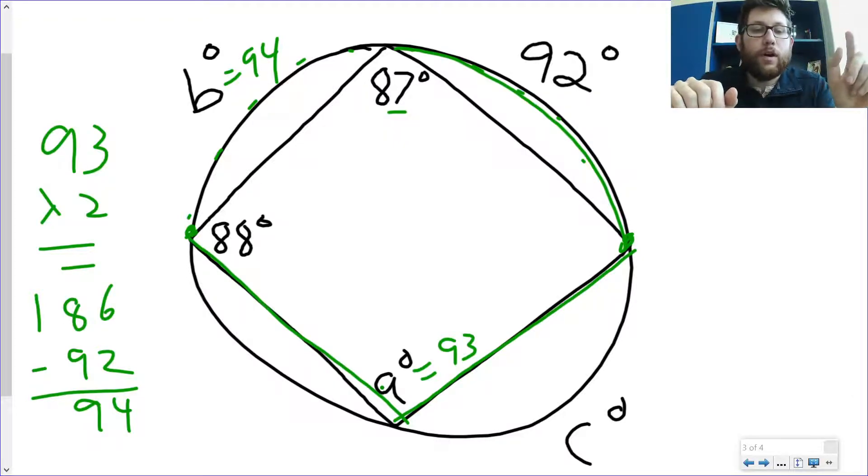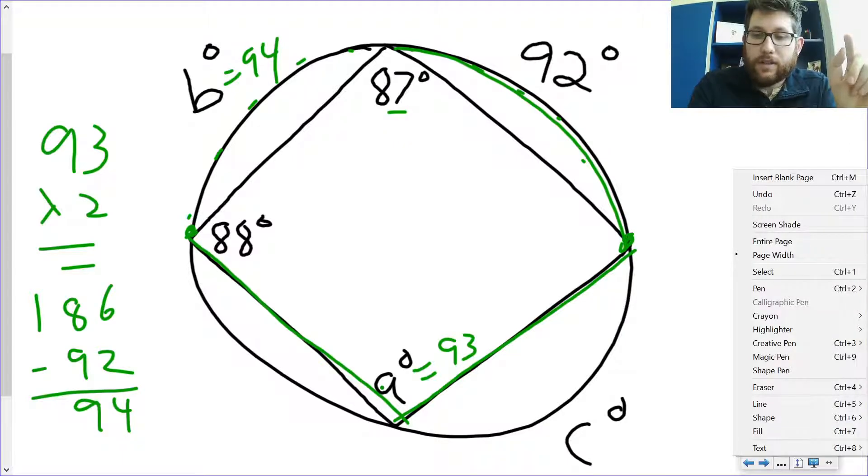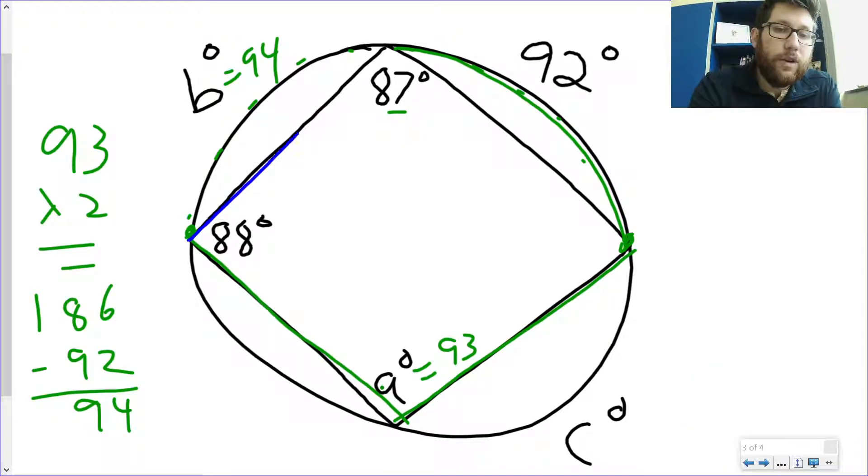Hopefully that's making sense so far. Let's look at one more. Let's look at that 88 degrees. So that 88 degrees is also an inscribed angle, and if I double it, it would get me from this distance all the way around to that distance, and I could solve by subtracting 92, because I know 92 is part of that arc that would get me c.